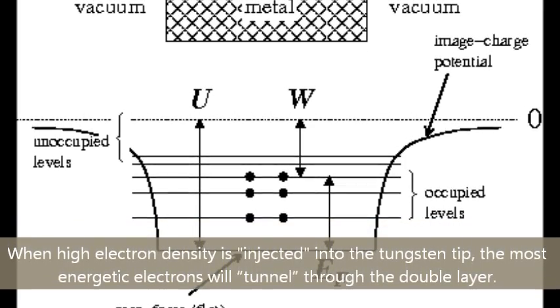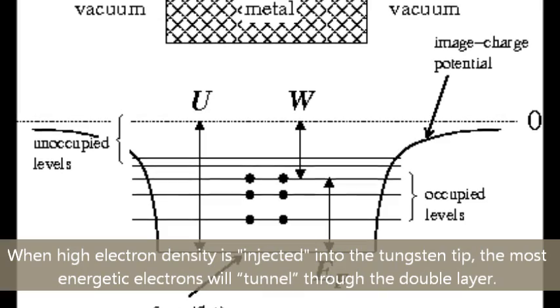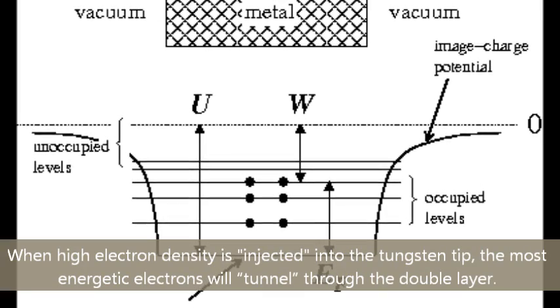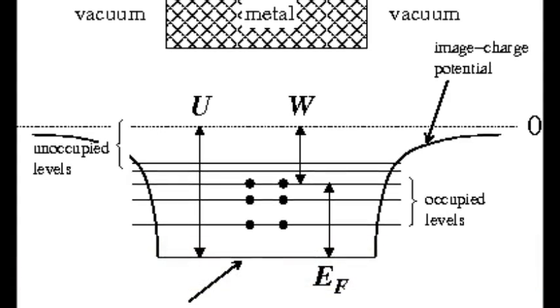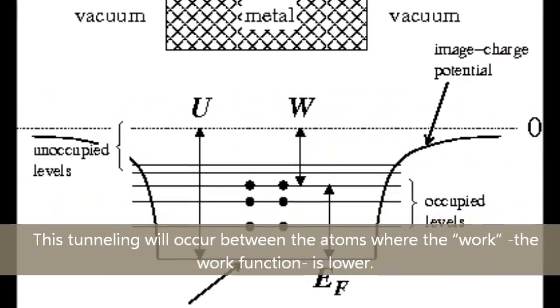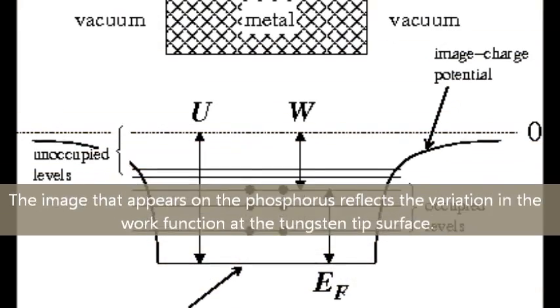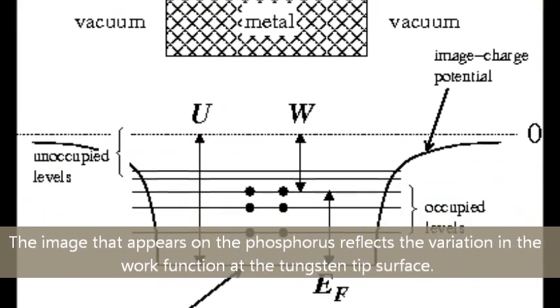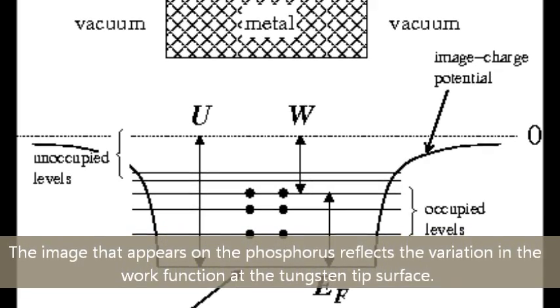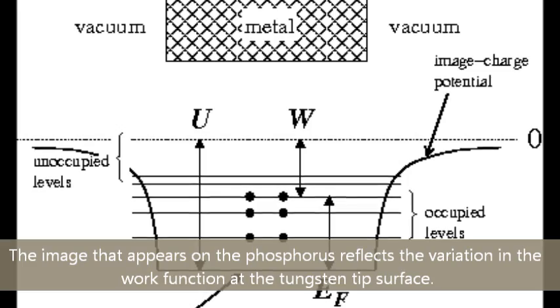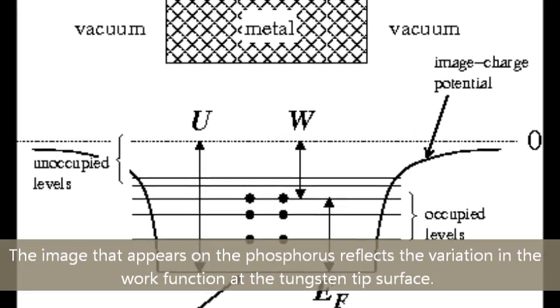When high electron density is injected into the tungsten tip, the most energetic electrons will tunnel through the double head. This tunneling will occur between the atoms where the work function is lower. The image that appears on the phosphorous reflects the variation in the work function at the cathode surface.